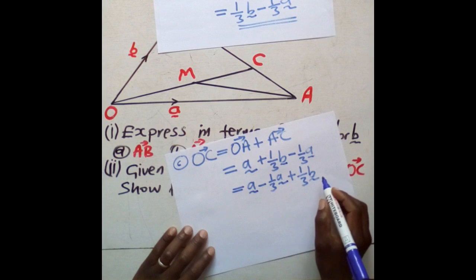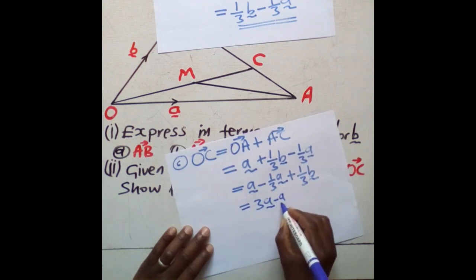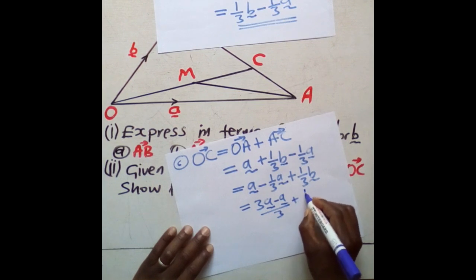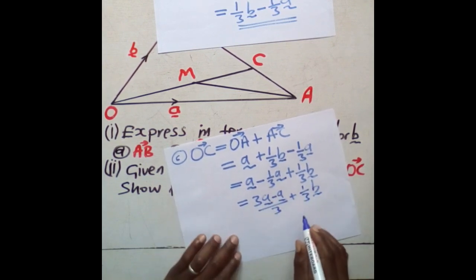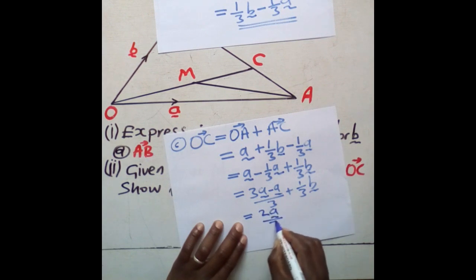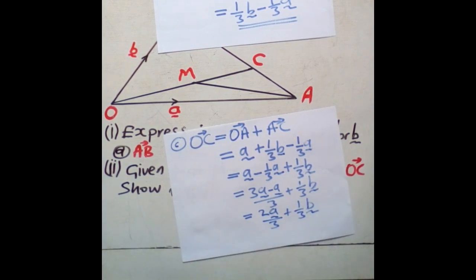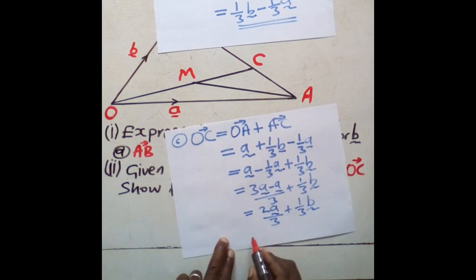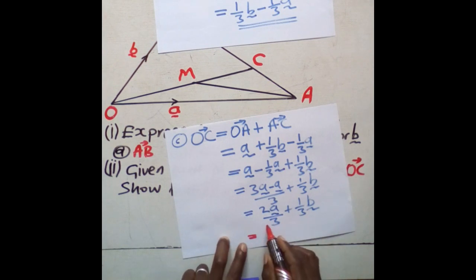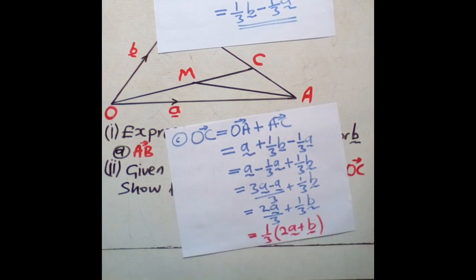From there, the common denominator is 3. So 3 times a will give you 3a, giving 3a minus a over 3 plus 1/3 b. When you subtract, 3a minus a gives 2a, so this equals 2/3 a plus 1/3 b. This is the answer. However, you can still write it in factorized form — since 1/3 is common, you can say 1/3 times open bracket (2a + b). This is the factorized form. So we have expressed OC in terms of a and b.